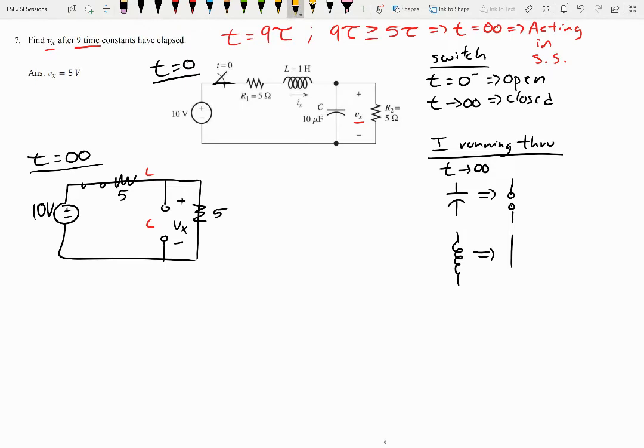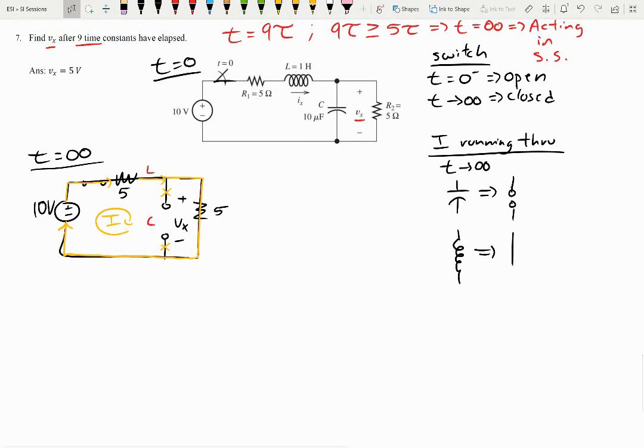But once we close this switch up here, that'll allow current to be induced. Current goes that way, that way. Can't go down an open wire, so it'll bypass these two and just allows this current to travel. And like before, we can do one of two methods. It's up to you which one you want to do. So from there to there, that is V of X. And then from there to there, that is also V of X. Because they're in parallel, they're going to have the same voltage drop.